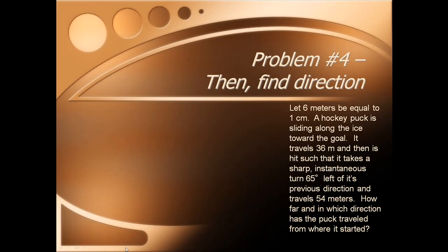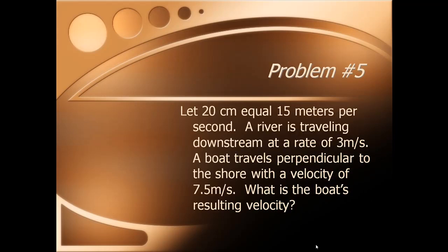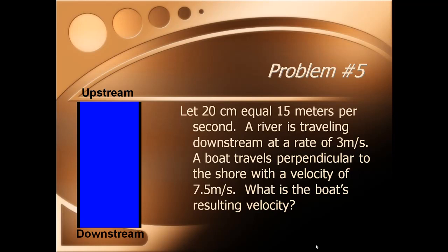The last thing that we're going to do for this part is one more problem. Let 20 centimeters equal 15 meters per second. That's going to be a conversion ratio. A river is traveling downstream at a rate of 3 meters per second, and a boat travels perpendicular to the shore with a velocity of 7.5 meters per second. What is the boat's resulting velocity?